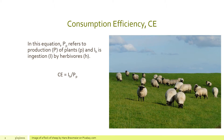In this equation, P sub P refers to the total amount of grass in the field, and I sub H refers to the amount of grass ingested by the sheep — H refers to herbivore in this case. So if you want a way to remember it, H is for herbivore.